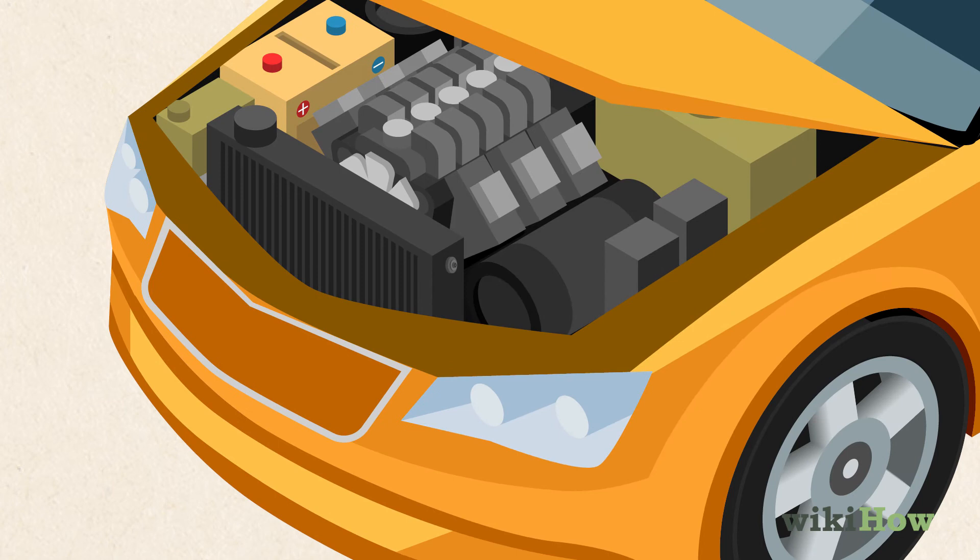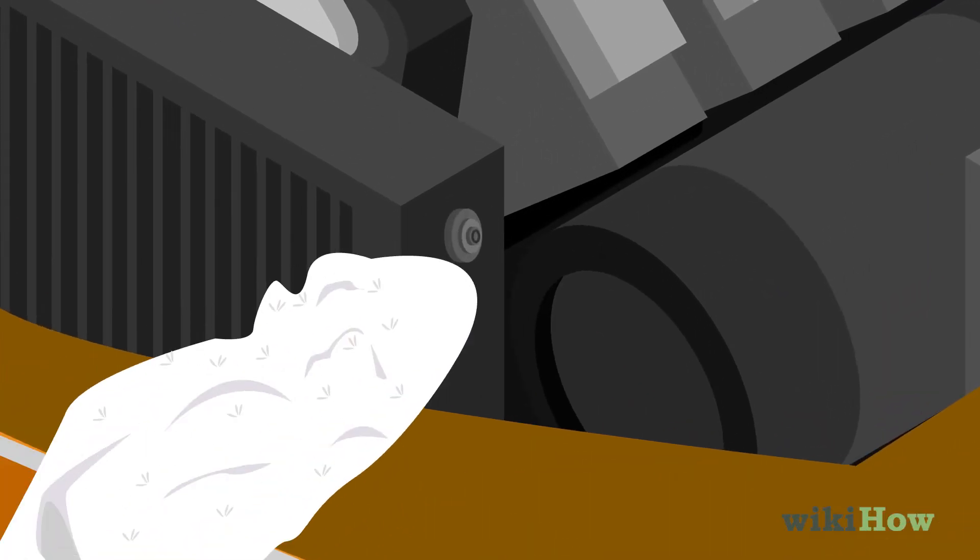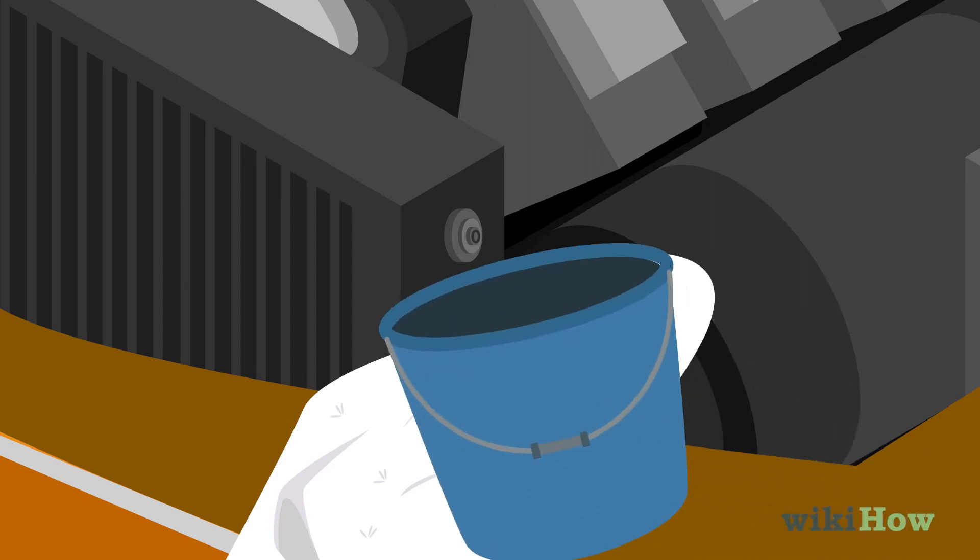Next, find your bleed valve by looking on each side of the radiator for a small valve at the top. Then, place a cloth or bucket underneath the bleed valve to catch any water that spills out. Grab a second bucket to hold directly under the bleed valve as you empty it.